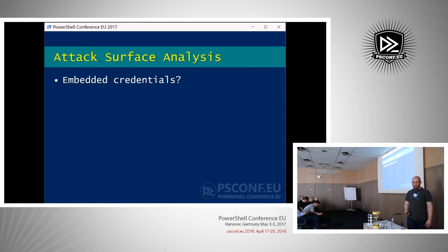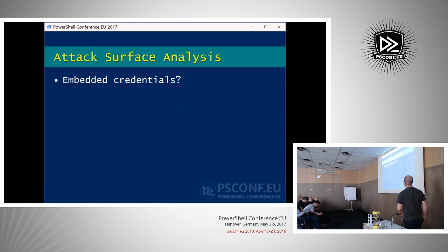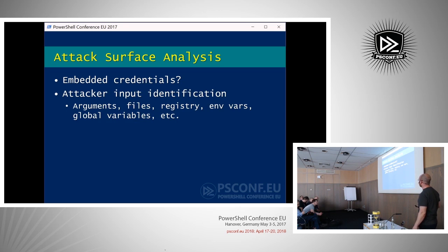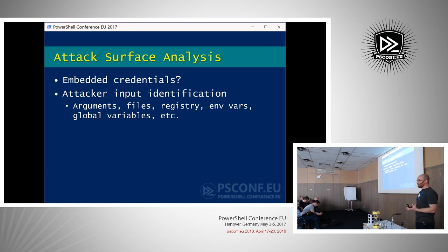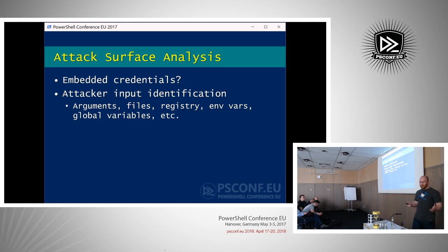What sort of things is an attacker going to look at when doing a code review of your code — which you should have done in the first place? They're going to look for the obvious — things like hardcoded credentials, which should never happen. They'll also identify what their input to your code is: what are all the parameters, do you interact with files or directories that could be hijacked, are you dealing with global variables? Global variables are a bad thing, and I'll show an example of why they're bad and how an attacker can control them completely.